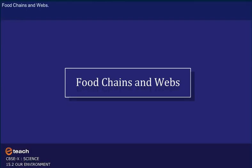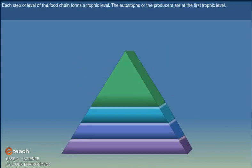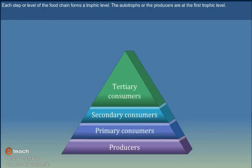Food chains and webs. We have formed a series of organisms feeding on one another. This series of organisms taking part at various biotic levels form a food chain. Each step or level of the food chain forms a trophic level.